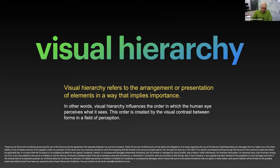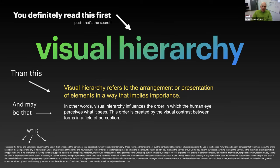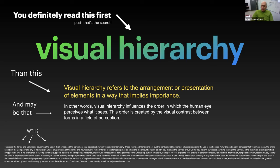The order is created by visual contrast between forms in a field of perception. What happens is you definitely read the biggest element first — that's the secret — then the next, and maybe the next, and the rest you're not going to read. So in all of your layouts and your design, this is how it functions. The least important stuff you make the smallest, at the bottom basically.